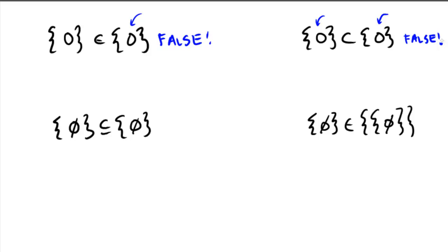To draw a distinction to the top right, consider the bottom left: we have the set containing the null set, and we're asking if it's a subset-or-equal-to the set containing the null set. The only thing in the set on the left is the empty set — and is that also on the right? Yes, it is. So this is a true statement. It's okay that they're actually equal because that's allowed for by the bar underneath the subset symbol.